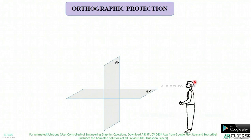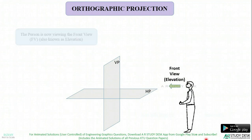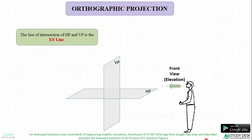This is a person who is viewing from here such that the line of sight is perpendicular to VP. So this view is called front view, also called elevation. Now there is a line at the intersection of HP and VP and it is called the XY line. For this person, X will be on his left and Y will be on his right.